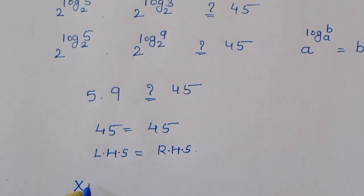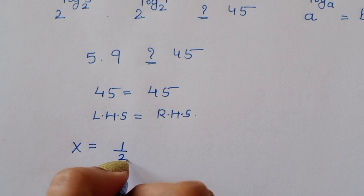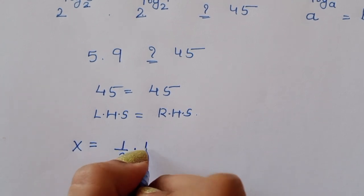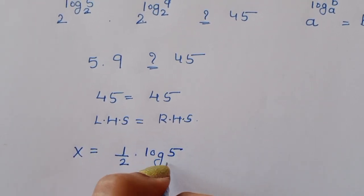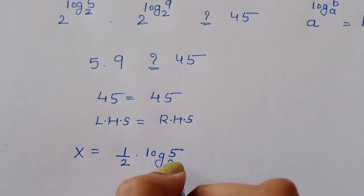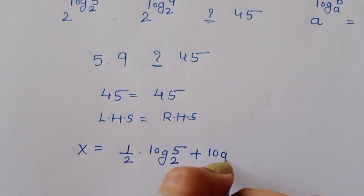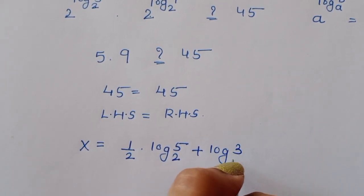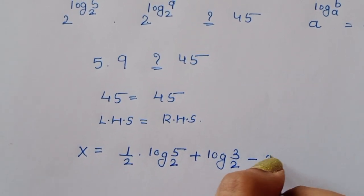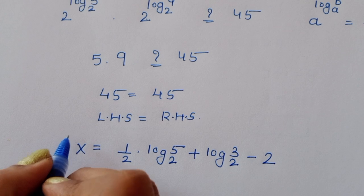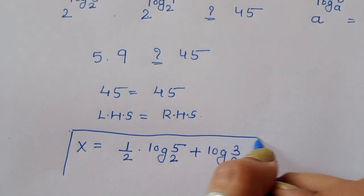Therefore, x is equal to 1 upon 2 times log of 5 to the base 2 plus log of 3 to the base 2 minus 2. This is the correct solution for this equation.